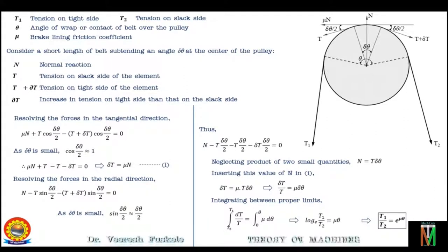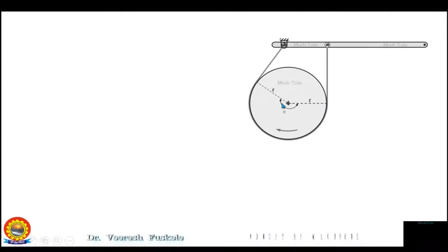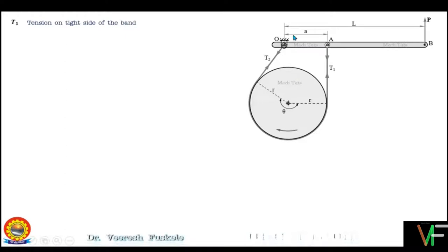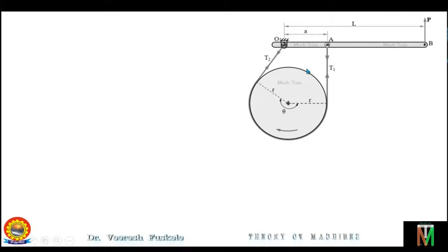Moving ahead with the topic, let's see this line diagram of a simple band brake. As you can see, it consists of a drum and a belt or flexible steel band lined with friction material which embraces a part of the rotating drum. One end of the band is attached to the fulcrum, that is point O of the lever, while the other end is attached to the lever at distance A from the fulcrum. The force P is applied at the free end of the lever. This tightens the band on the drum and hence the brakes are applied. The braking force is provided by the friction between the band and the drum.